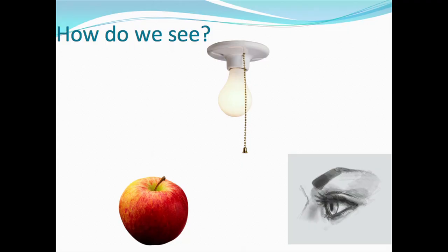Our eyes are very important in how we sense the environment around us. Approximately one-third of our brain is devoted to visual processing. Now we're going to explore how we see — take a look at your worksheets and predict, using the diagram, how you think light would reflect off an object and come into your eye.